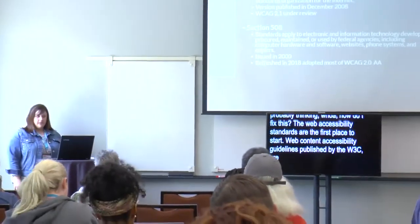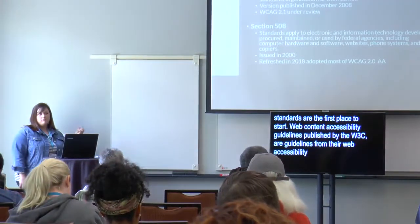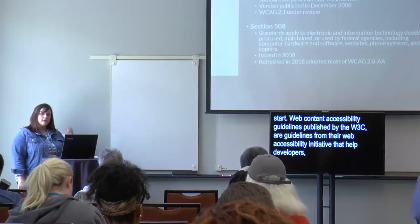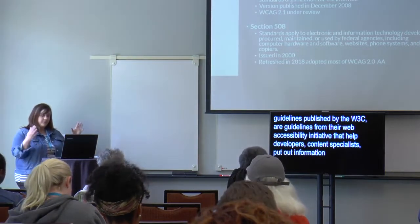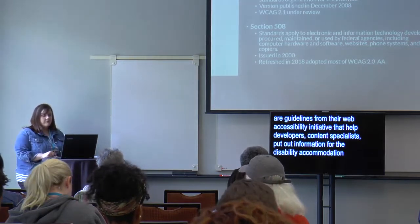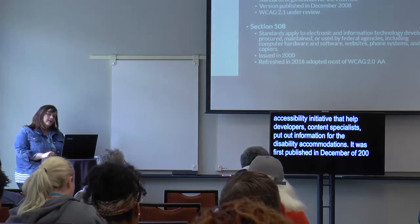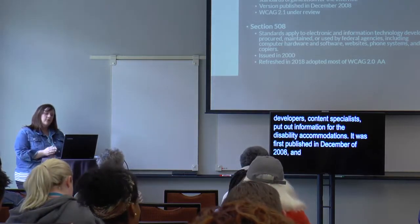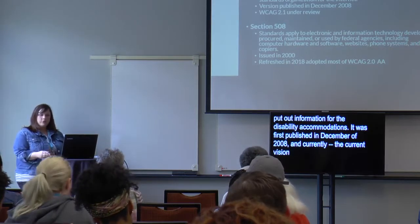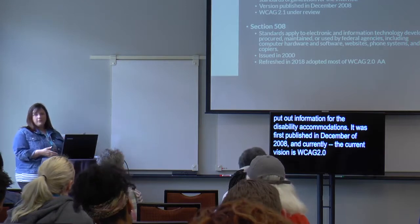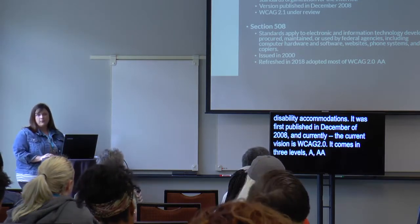So where do we start? If you're new to accessibility, you're probably thinking: how do I fix this? The web accessibility standards are the first place to start. Web Content Accessibility Guidelines, published by the W3C as part of their Web Accessibility Initiative, help developers and content specialists put out information for disability accommodations. It was first published in December 2008. The current version is WCAG 2.0, which comes in three levels: A, AA, and AAA. They're currently reviewing a draft of version 2.1, expected as early as summer 2018.